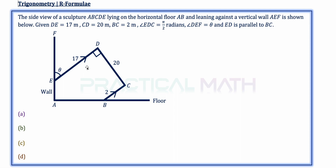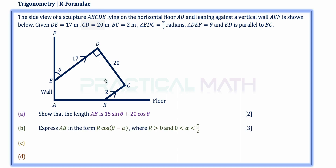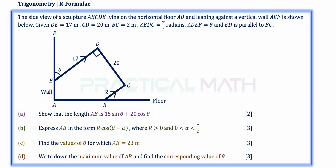ED is also known to be parallel to BC. In part A of this question, show that the length AB is 15 sin theta plus 20 cos theta. In the next part, express AB in the form R cos(theta minus alpha), where R is positive and alpha is an acute angle.